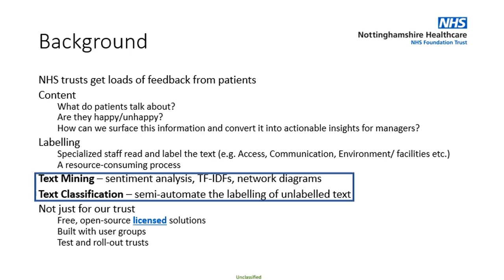The point about licensing is pretty important because open source software gives users the freedom to run, copy, distribute, study, change, and improve. Just putting code on GitHub without a license does not make it open source and does not give users the right to modify or even run your code. The copyright usually belongs to the person who wrote the code or the organization they work for. So it's important to release your tool with the appropriate license so that everybody can use it, make improvements, and give it back to the community.